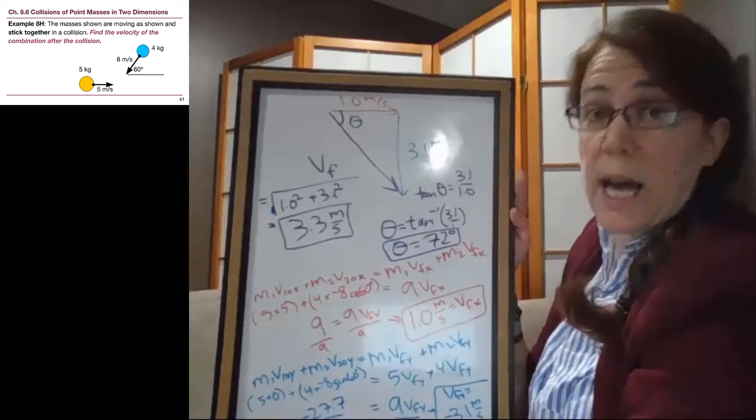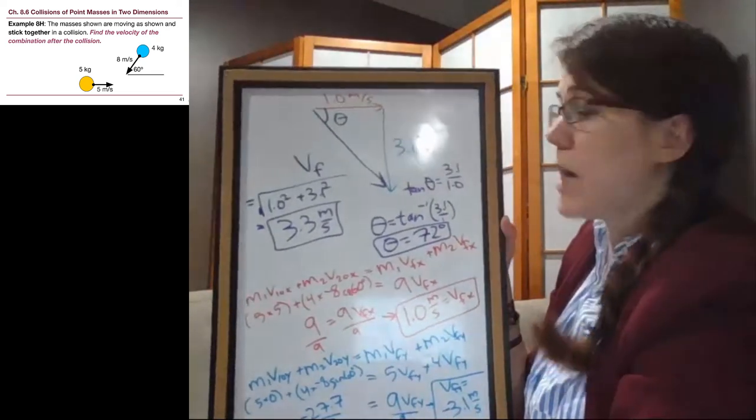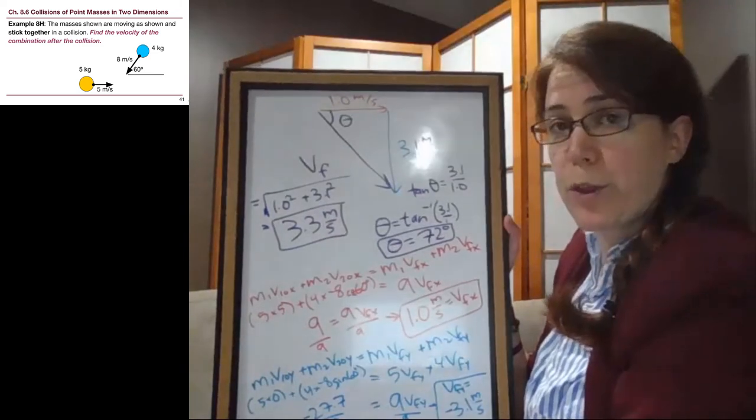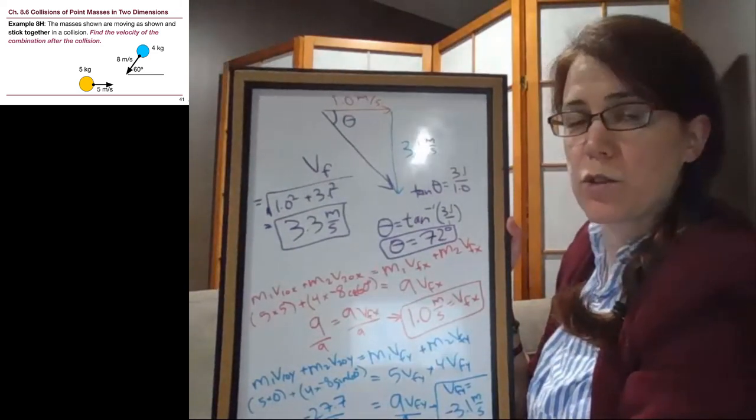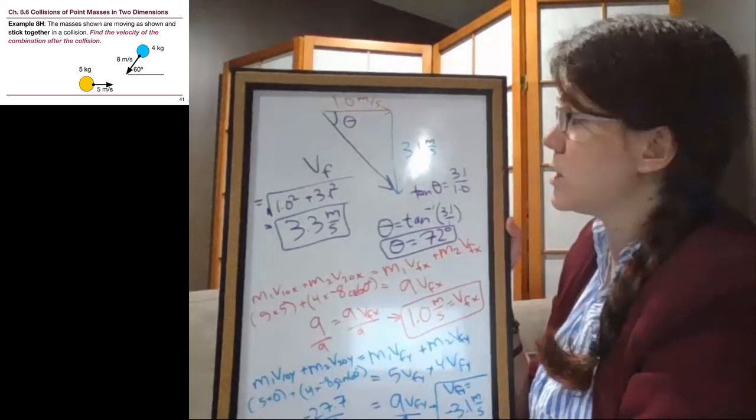So that's the last example from chapter 8. You should definitely compare this example with the previous one so that we can see the commonalities between the two two-dimensional collision problems.